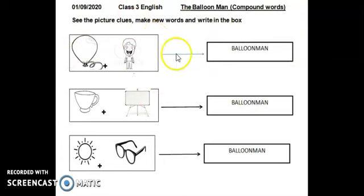This is balloon and this is a man, so it is balloon man. Now here, this is cup and this is board, so when you write cupboard, it is not cupboard, it is called cupboard. Cupboard matlab jo aap ki almari hoti hai na, that is called cupboard.